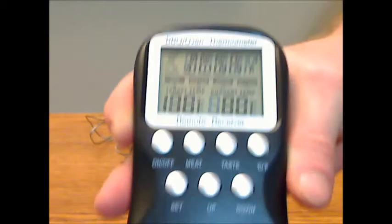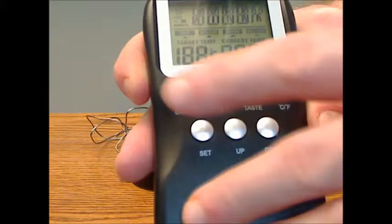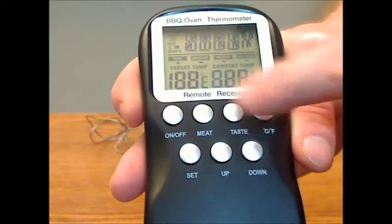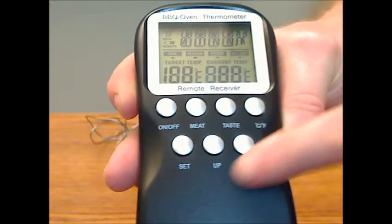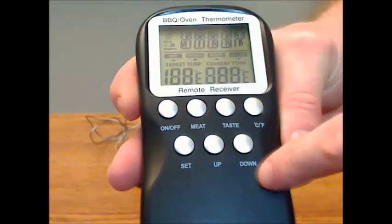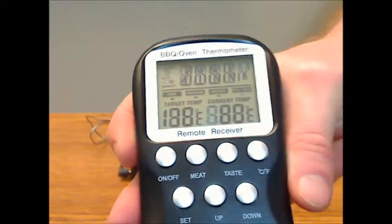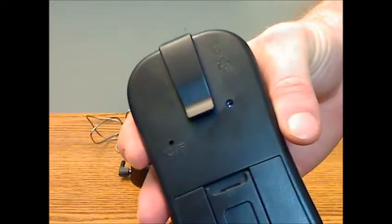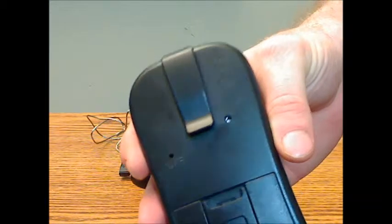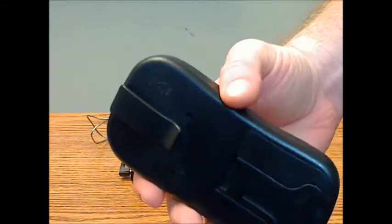The front of the thermometer has several buttons: the on/off switch, the meat selection, taste, celsius and fahrenheit, and then the manual settings which I'll get into here in a second. But the back of the thermometer has a clip on it for wearing on your belt or on the shirt since this is wireless and you can carry it around with you.